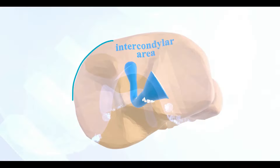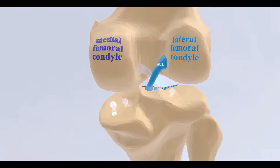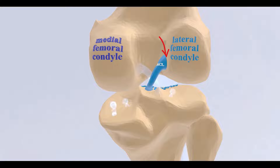Let's take a look. Here is the plateau of the tibia, and the ACL is inserting at the intercondylar area. So again, the ACL originates from the medial aspect of the lateral femoral condyle and inserts at the intercondylar area.